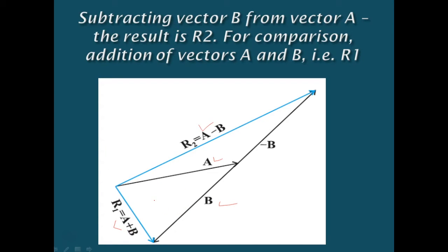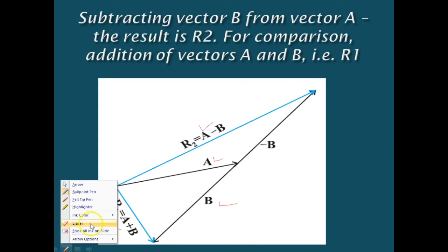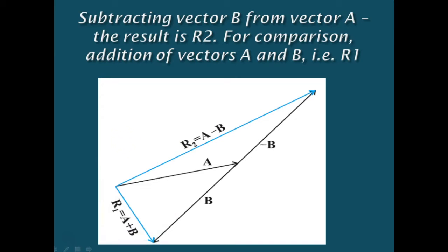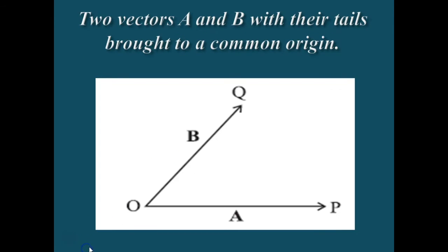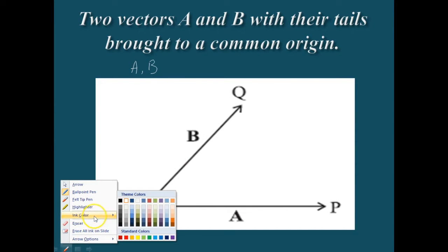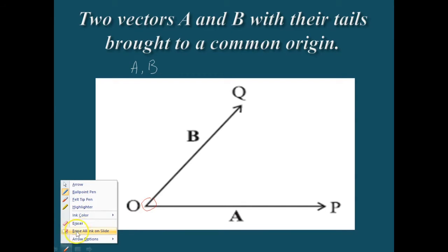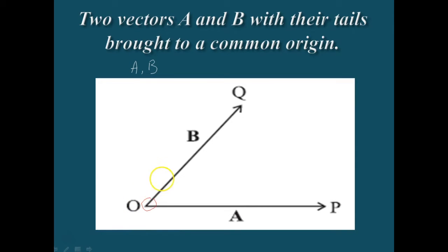We can use the parallelogram method to find the sum of two vectors. Suppose we have two vectors a and b. To add these vectors, we bring their tails to a common origin o, as shown in the figure. Here we are showing two vectors a and b with their tails brought to a common origin. Whenever we want to add two vectors a and b, we bring the tails of the vectors to a common point — in this case, that common point is o. The vector a as well as vector b is brought to this common point o.